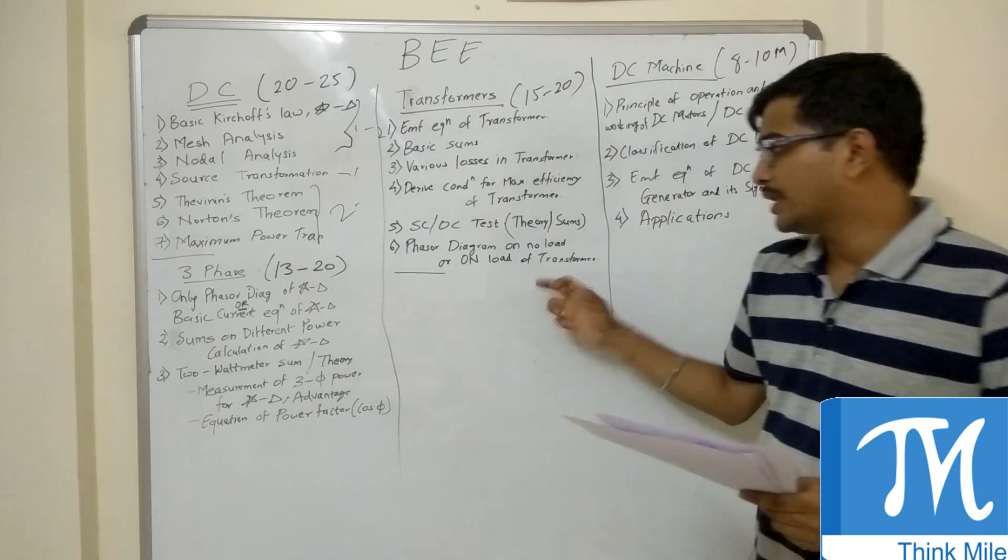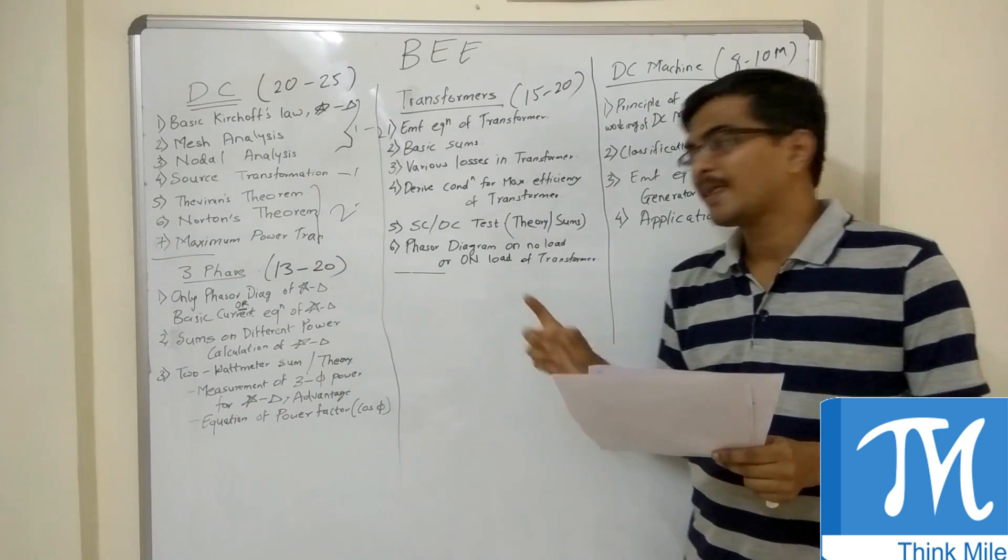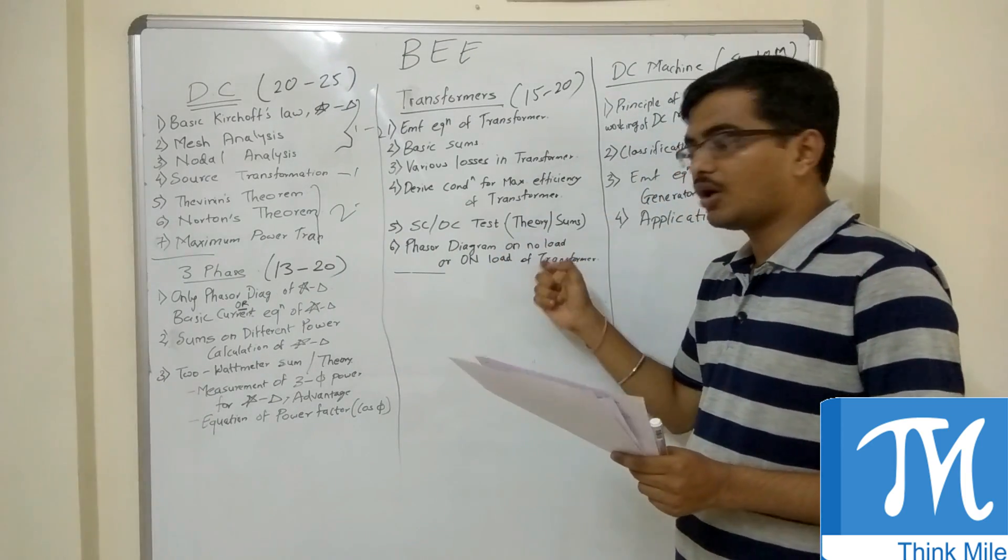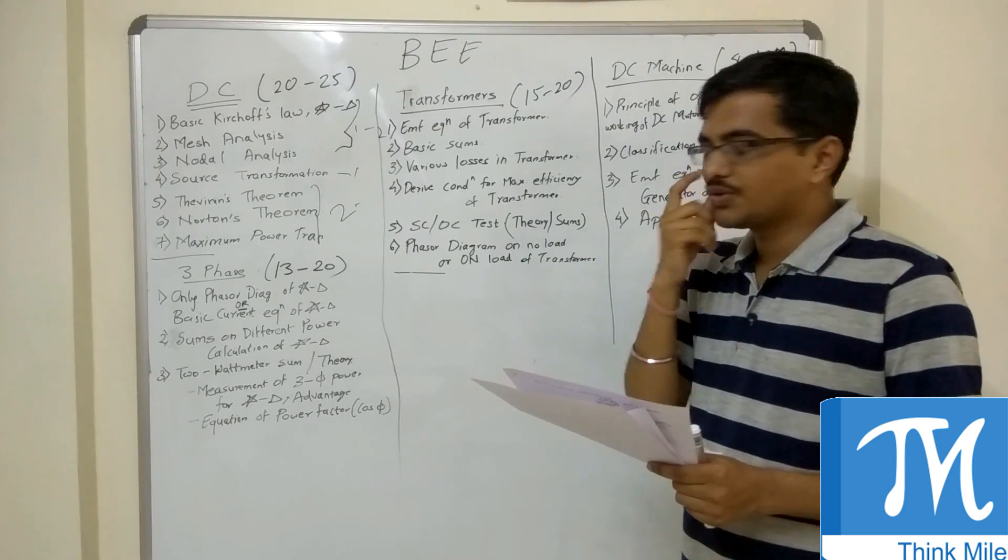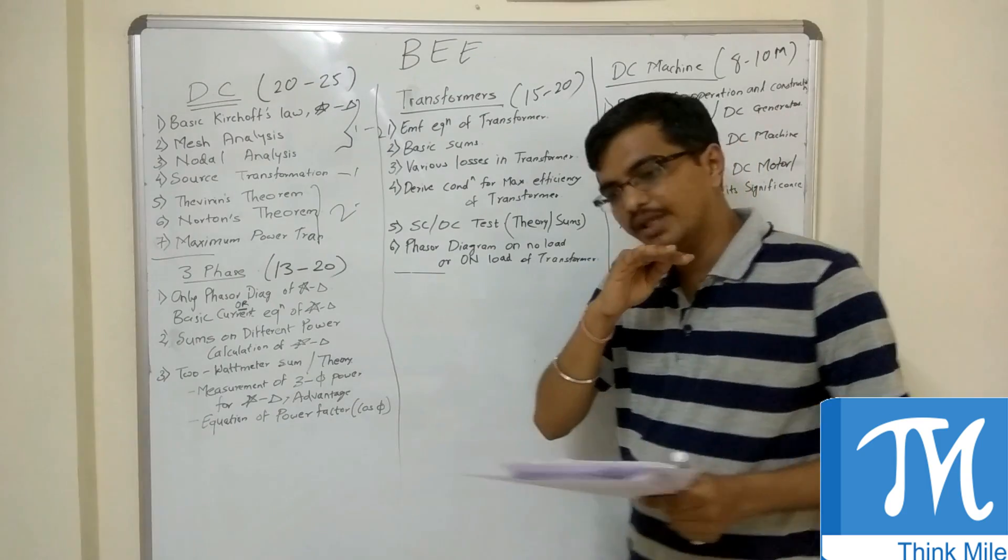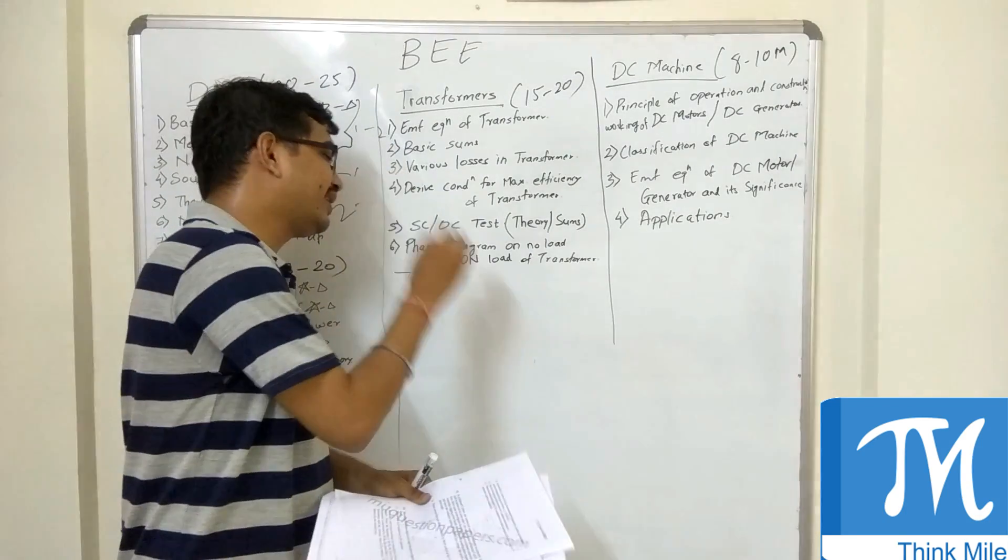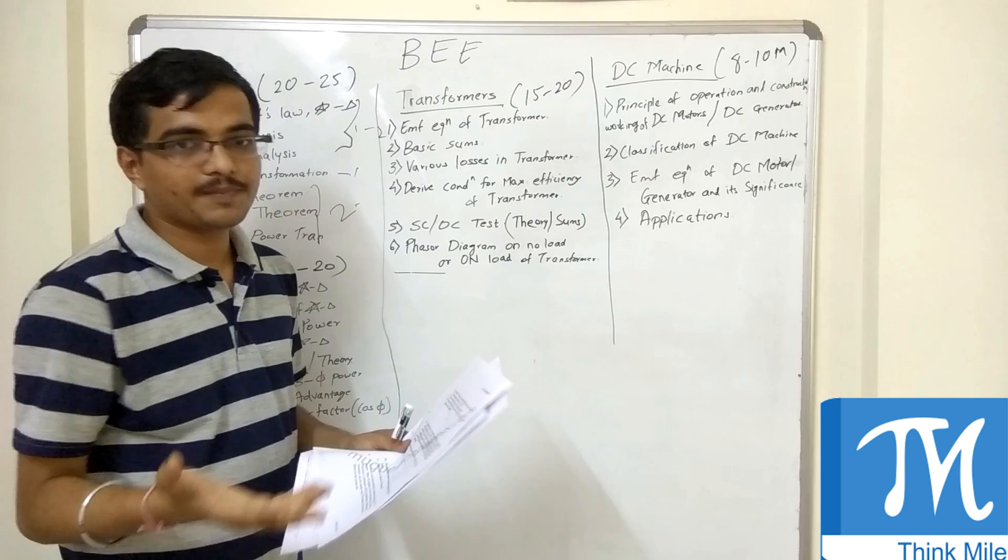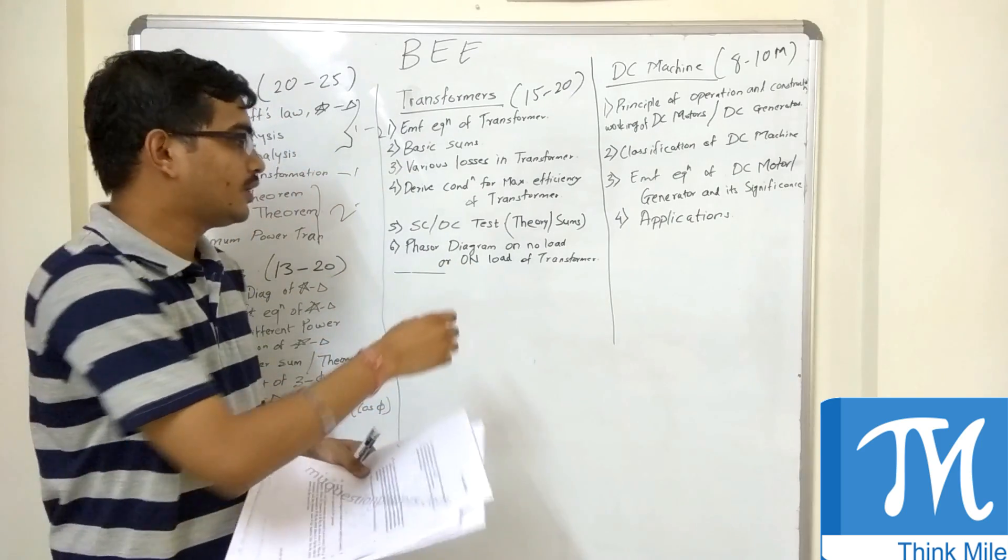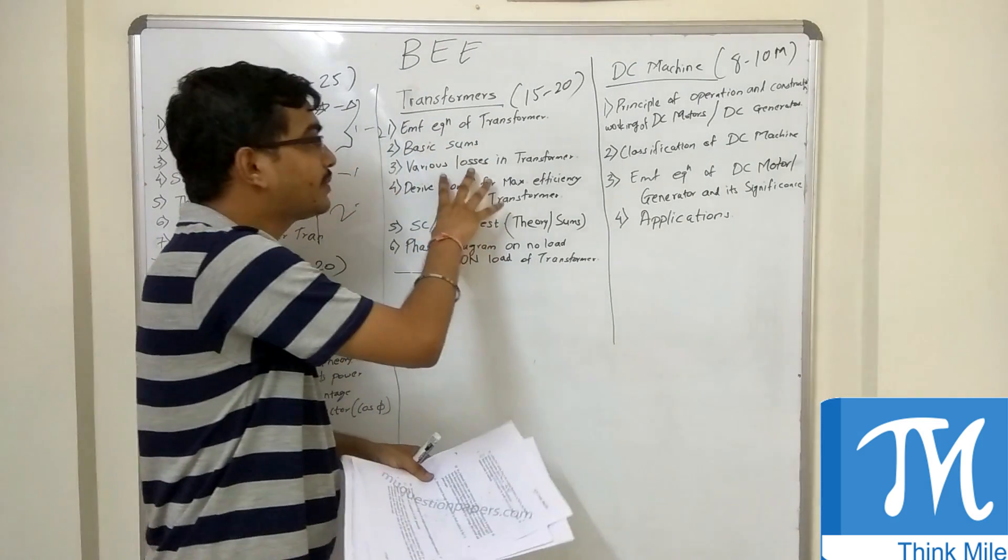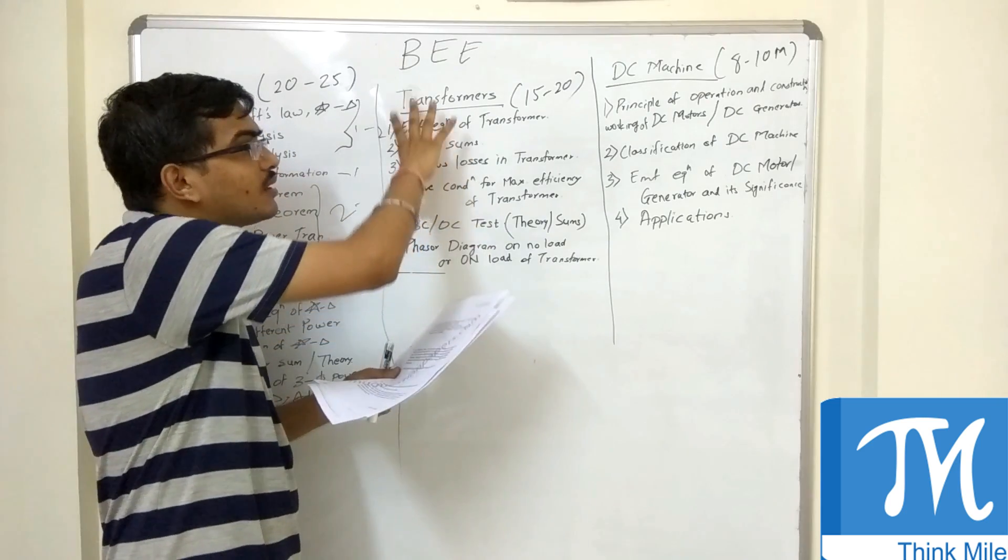Next, there are a lot of questions on phasor diagram on no load or on load of transformer. There will be a question that will always appear on this, or they might ask you to find the equivalent circuit of a transformer. One question on phasor diagram of transformer will be asked in the paper, a bit different than what answers are properly available. I will try to give you the answers on this topic on my website www.thinkmy.com. I will have to find the proper answer for this. So overall if you do this chapter you can fetch around 15 to 20 marks. In the last paper there were around 20 mark questions on this topic.